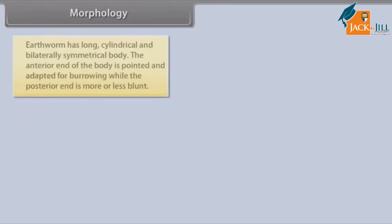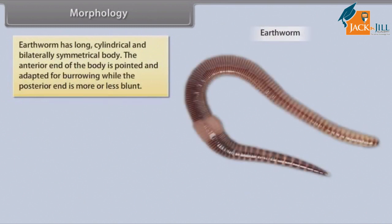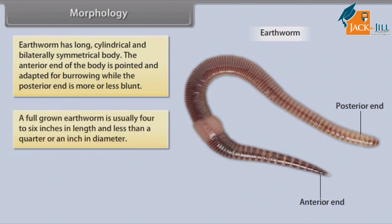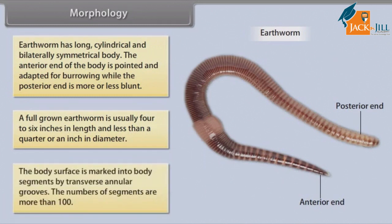Morphology: Earthworm has a long cylindrical and bilaterally symmetrical body. The anterior end is pointed and adapted for burrowing, while the posterior end is more or less blunt. A full-grown earthworm is usually 4 to 6 inches in length and less than a quarter of an inch in diameter. The body surface is marked into segments by transverse annular grooves, and the number of segments is more than 100.